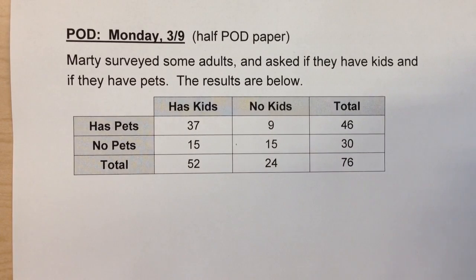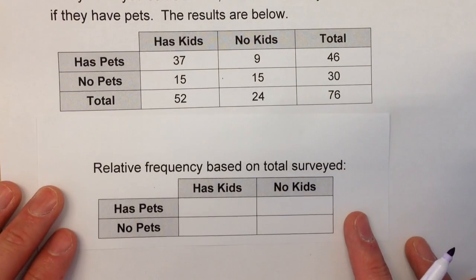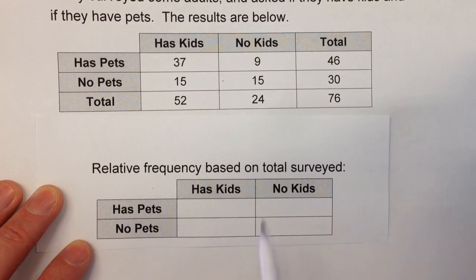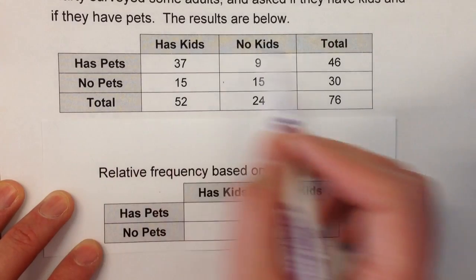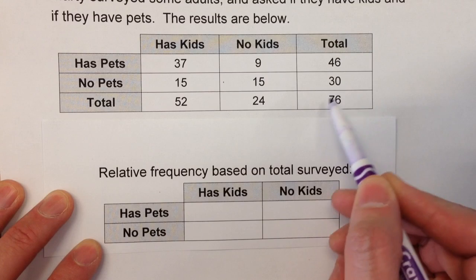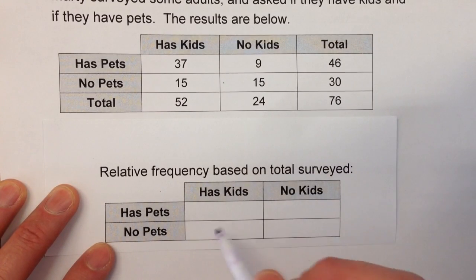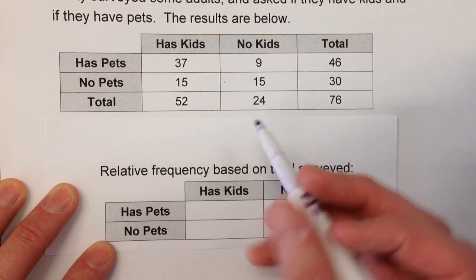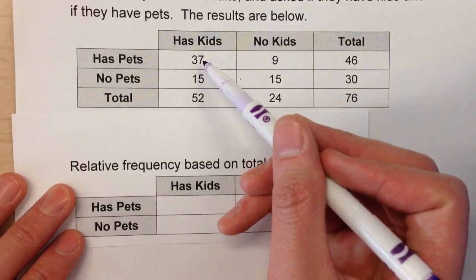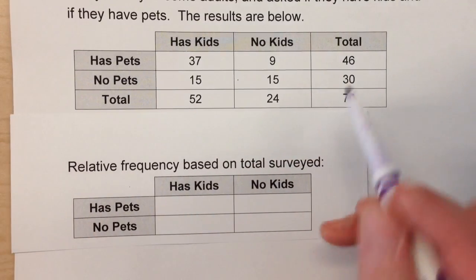There are three different kinds of two-way relative frequency tables we can make. One of them is a relative frequency table based on the total surveyed. With our data here, we know there were 76 total kids surveyed. So if we want to fill out this table based on the total 76 students who were surveyed, we just take each one of these numbers — for example, 37 — and divide it by the total 76.